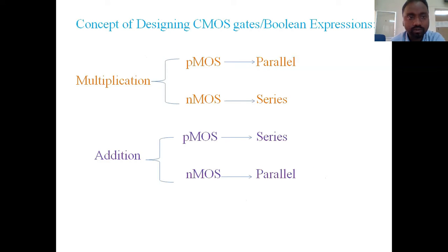Next thing what we need to know is, concept for designing CMOS gates or any other Boolean expressions, we need to remember two things. One is, if the expression or any gate having multiplication symbol in between two inputs, then the pMOS will be connected in parallel and nMOS will be connected in series.